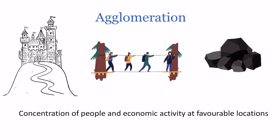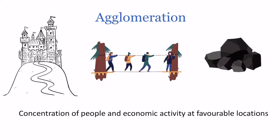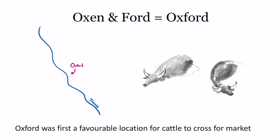Similarly, settlements might be close to resources. An example of this is Oxford, which is on the River Thames. The reason why Oxford first existed before the university was that it was a really favourable place for cattle to cross for the market. Oxford comes from the words 'oxon' and 'ford', meaning fording a river. This is the reason why Oxford first came into being many years ago.